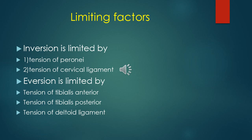There are some limiting factors of inversion and eversion. Inversion is limited by the tension of the peroneus muscles and the tension of the cervical ligament. Eversion is limited by the tension of tibialis anterior, tibialis posterior, and the tension of the deltoid ligament.